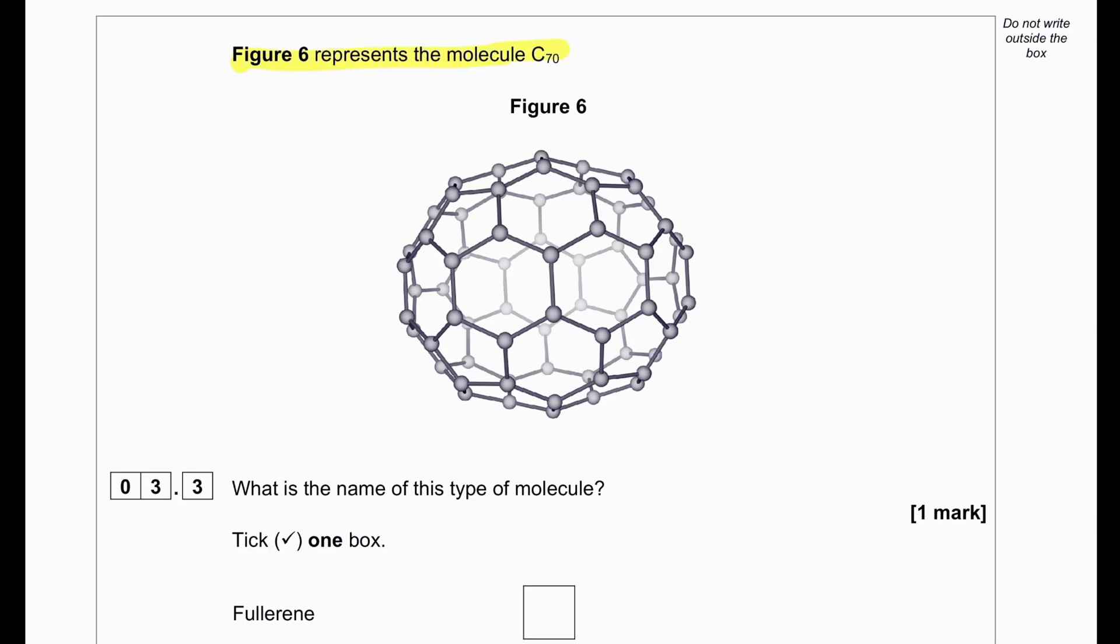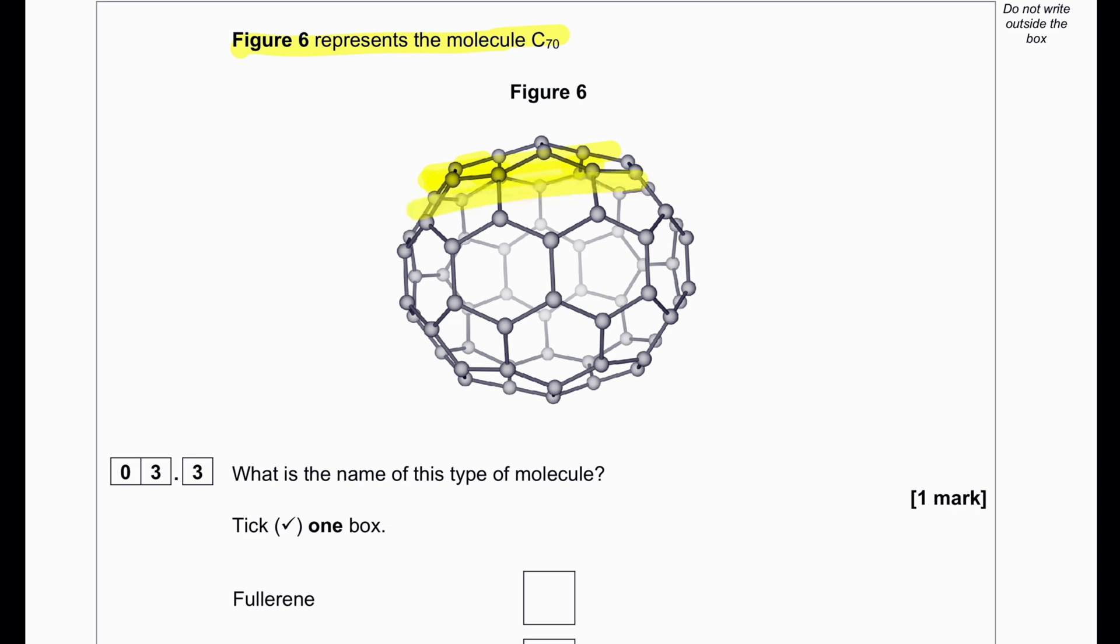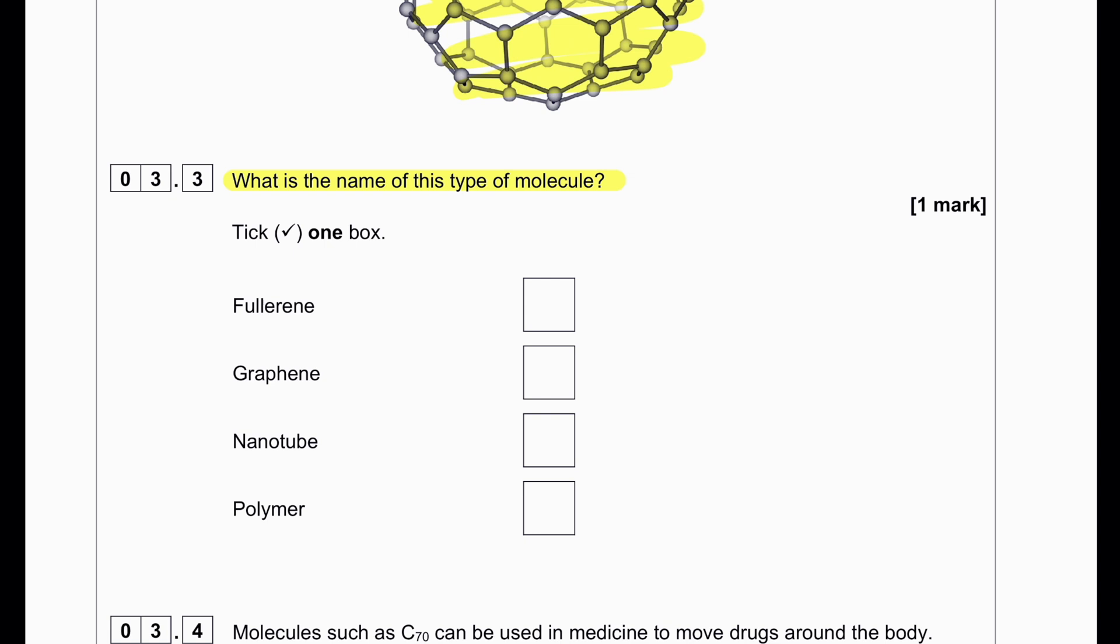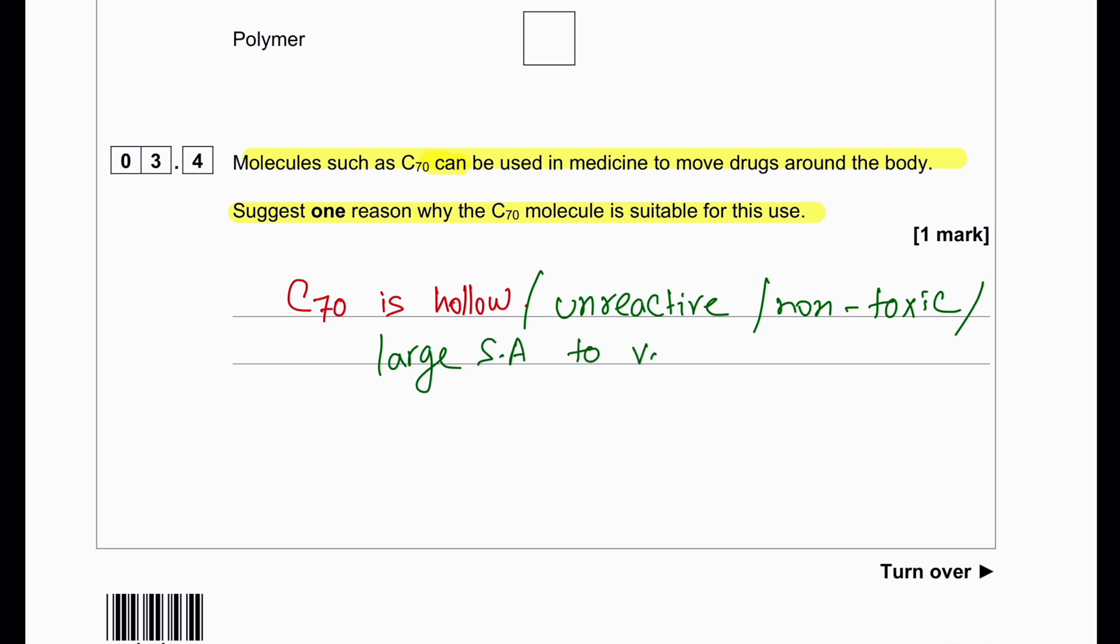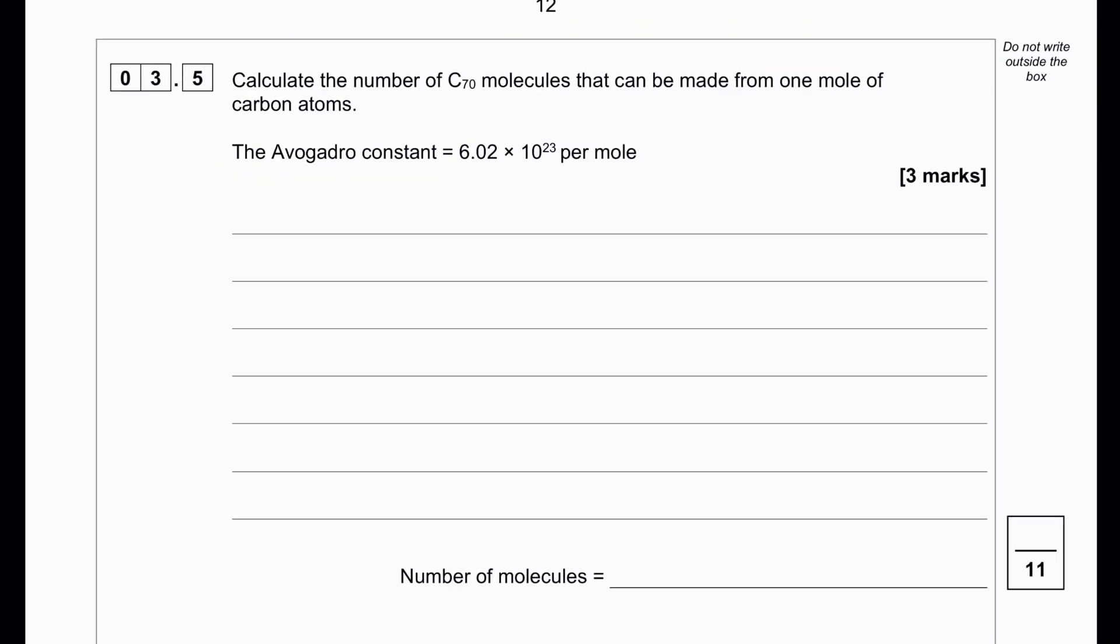Figure 6 represents the molecule C-70. This is a fullerene and it's spherical. Molecules such as C-70 can be used in medicine to move drugs around the body. Give one reason why C-70 molecule is suitable for this use. C-70 is hollow so it can carry medicine inside it. It's very unreactive, not toxic, and has a large surface area to volume ratio for delivering drugs.